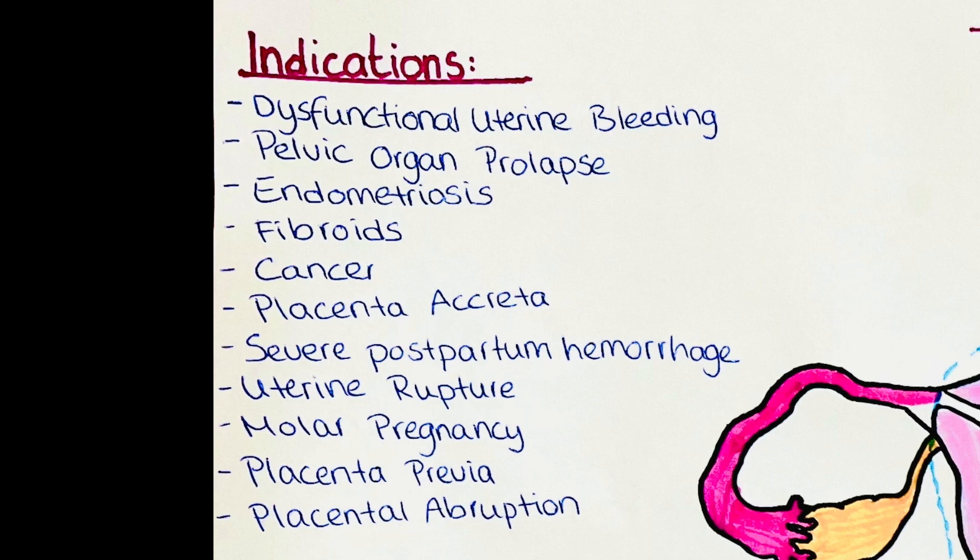Pelvic organ prolapse occurs when the uterus, bladder or rectum drop down from their normal position in the pelvis. It can cause a variety of symptoms including urinary incontinence, pelvic pain, and difficulty having intercourse or pain.